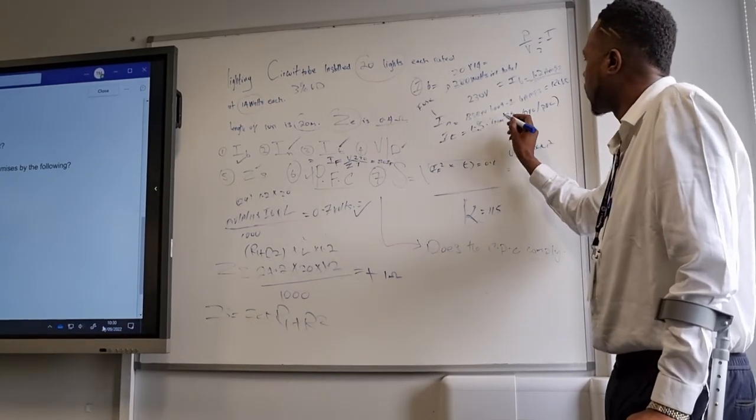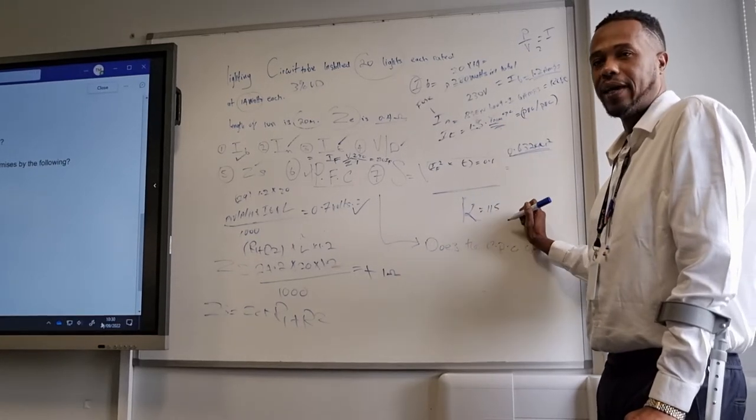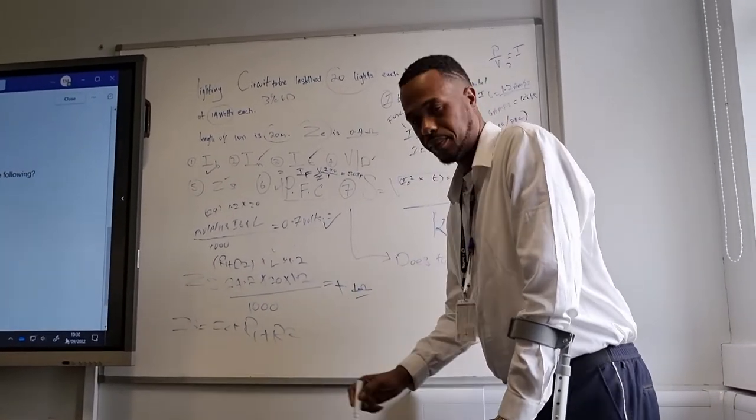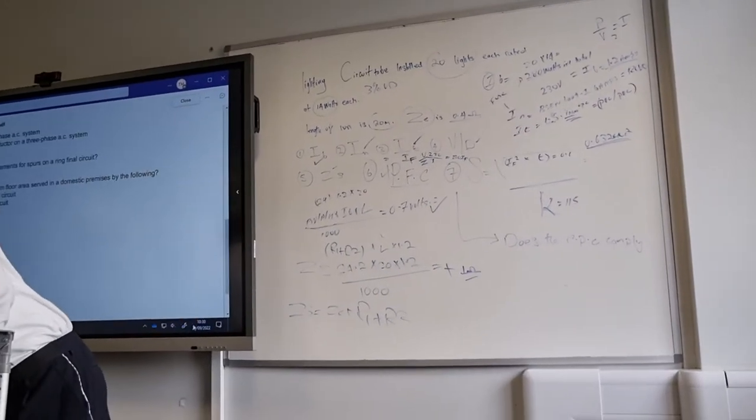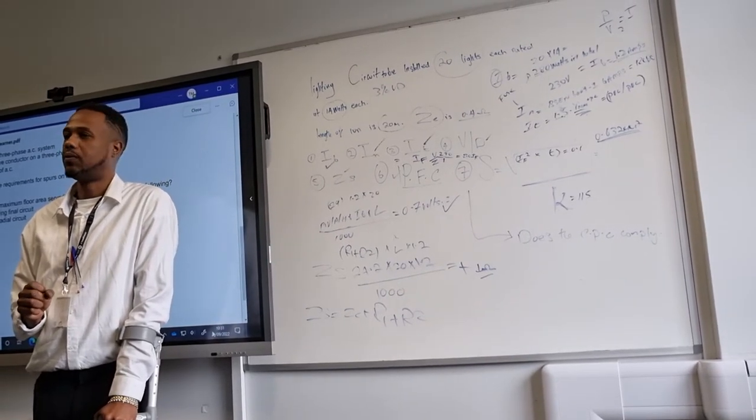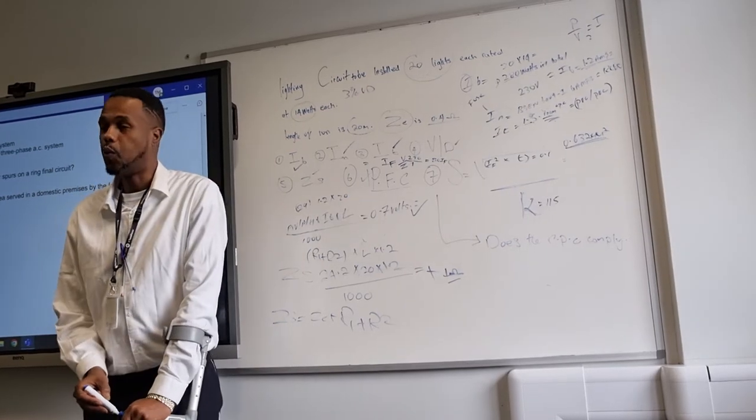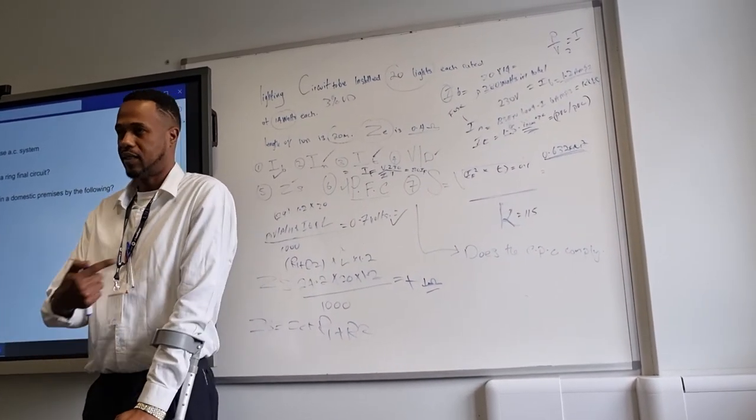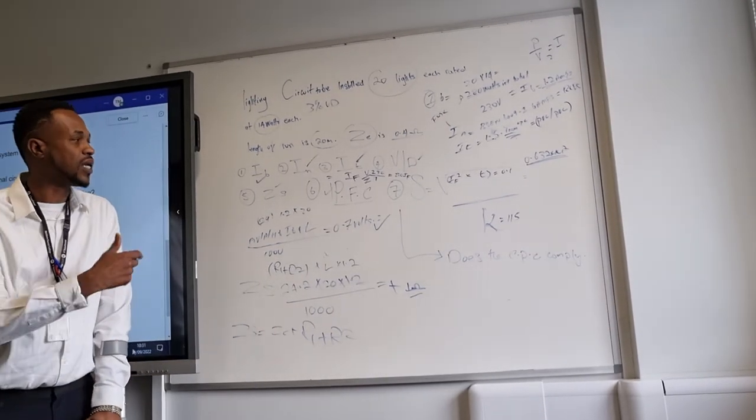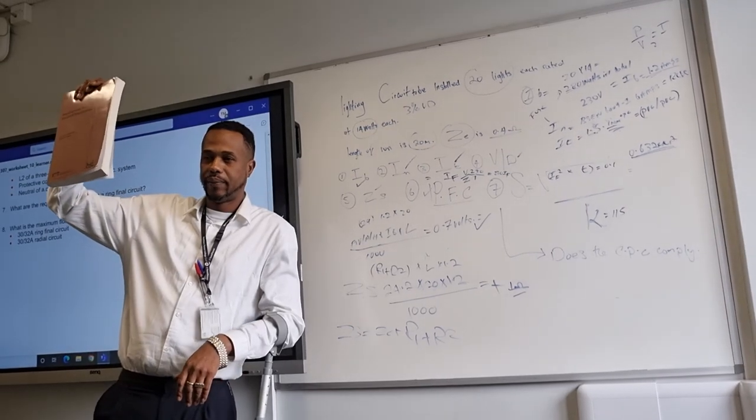And that is telling you what size the CPC that we've selected in the cable. One mil. And this is what will take care of the fault current. So does the one mil comply? Of course. All day every day. And I'll tell you why it does comply because when it comes to inspecting and testing, that's the least value allowed to accept. So that is designing the circuit and steps you have to take to make sure that everything complies with the regulation.